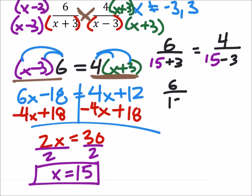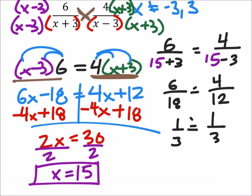So just working on the left side, I've got 6 over 15 plus 3 is 18. Simplified gives me 1 third. So these should be equal, right? And now I've got 4 over 15 minus 3, which is 12. 4 divided by 12 is 1 third. So this checks off.